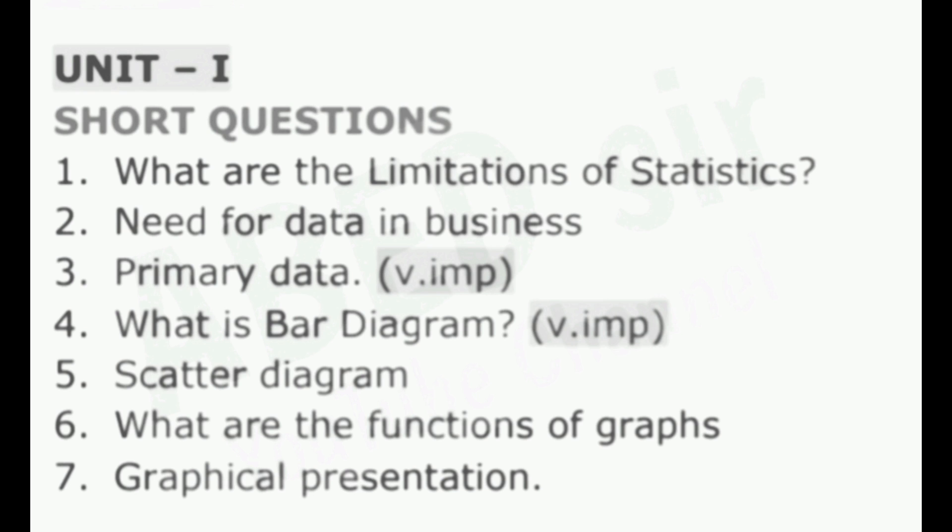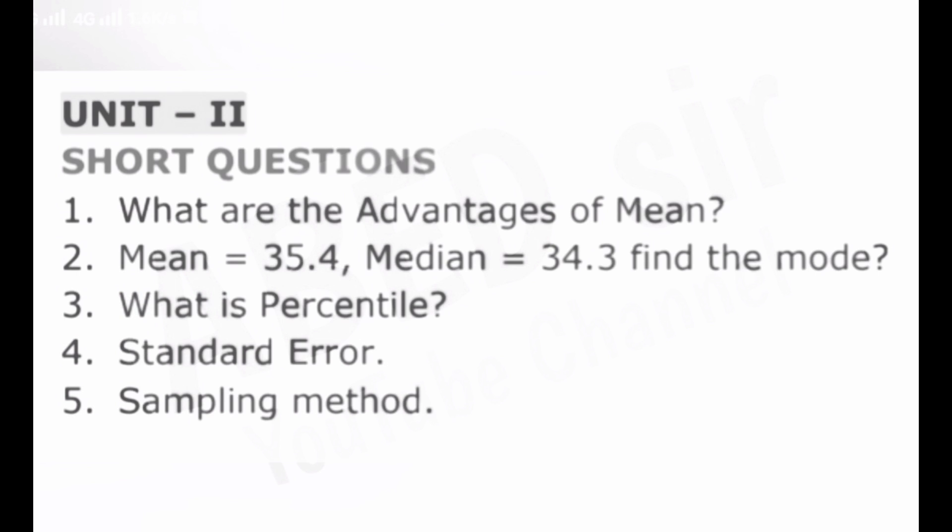From Unit 2, I've given five questions. Sampling method is important, and they may give mean and median and ask you to find the mode — you'll need the formula for that. We can expect one problematic question from Unit 2 in Part A. What is meant by percentile is also an important and repeated question from previous year papers. Prepare these five questions from Unit 2 — definitely one question will be there in Part A.